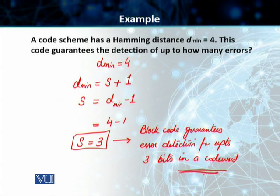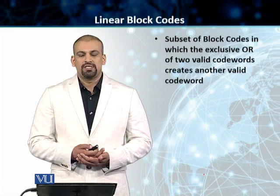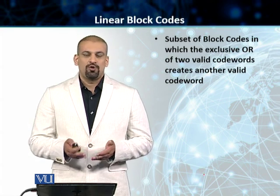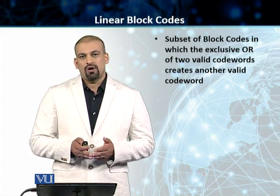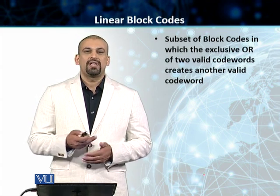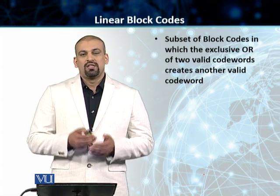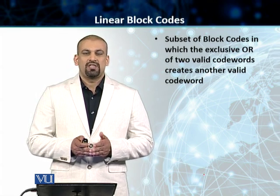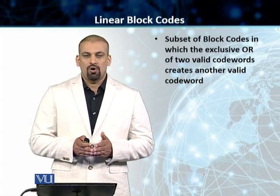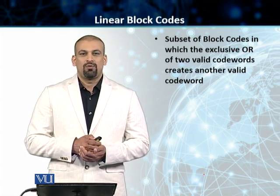This was our concept of minimum Hamming distance. Now let's talk about linear block codes. Linear block codes are a subset of block codes, and they have a unique property: the exclusive OR (XOR) of two codewords in a linear block code gives us another valid codeword within that same linear block code scheme.